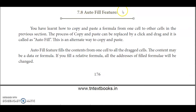Now we are going to see the auto fill feature. So what do you mean by auto fill? If you want to type a serial number or numbers from 1 to 100, you don't need to type each number one by one. In OpenOffice Calc, the auto fill feature lets you type only the starting value and drag to automatically list the numbers. This is an alternate way to copy and paste - click and drag - and it is called auto fill.